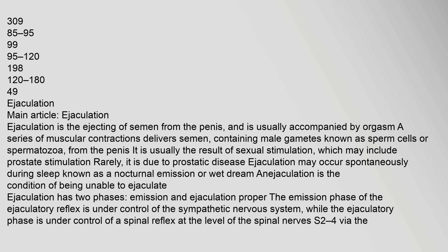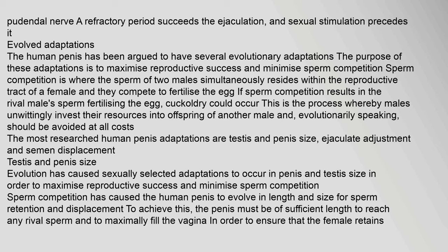Ejaculation is the ejecting of semen from the penis and is usually accompanied by orgasm. A series of muscular contractions delivers semen containing sperm cells from the penis. It is usually the result of sexual stimulation. Ejaculation may occur spontaneously during sleep, known as a nocturnal emission or wet dream. Ejaculation has two phases: emission and ejaculation proper. The emission phase is under control of the sympathetic nervous system while the ejaculatory phase is under control of a spinal reflex at the level of spinal nerves S2–4 via the pudendal nerve.